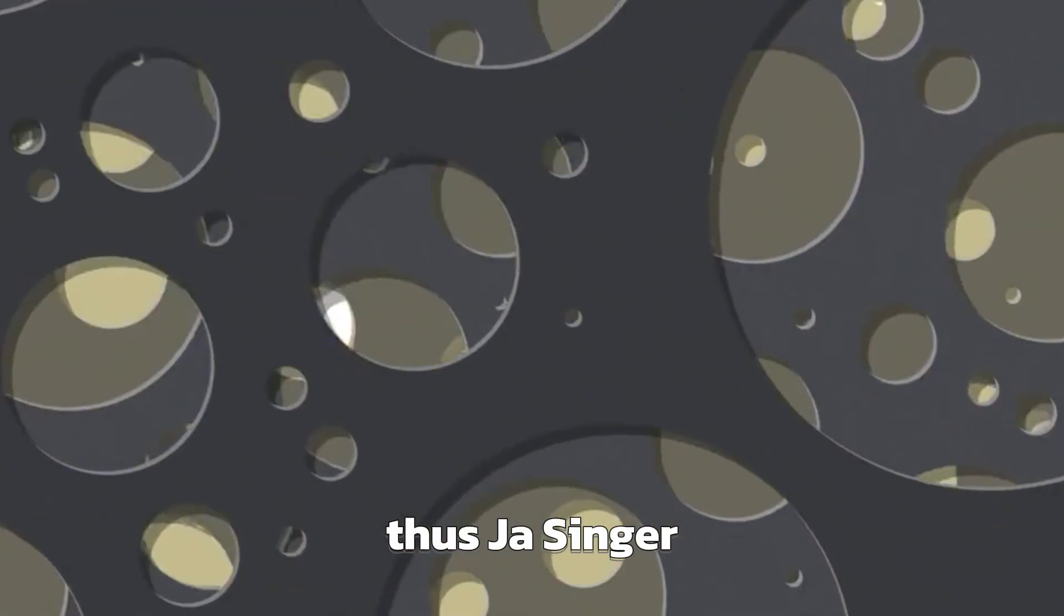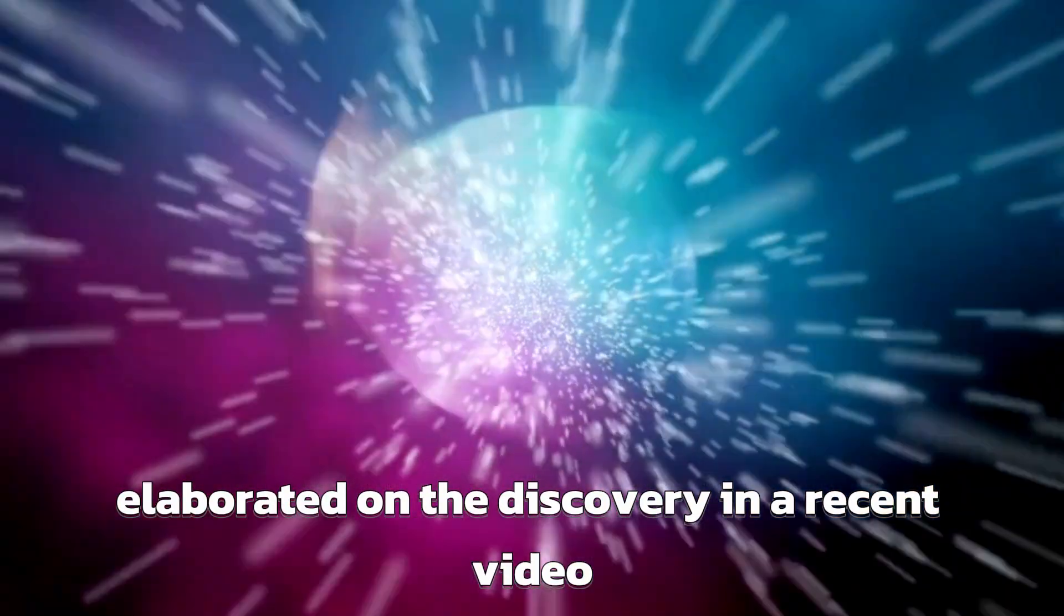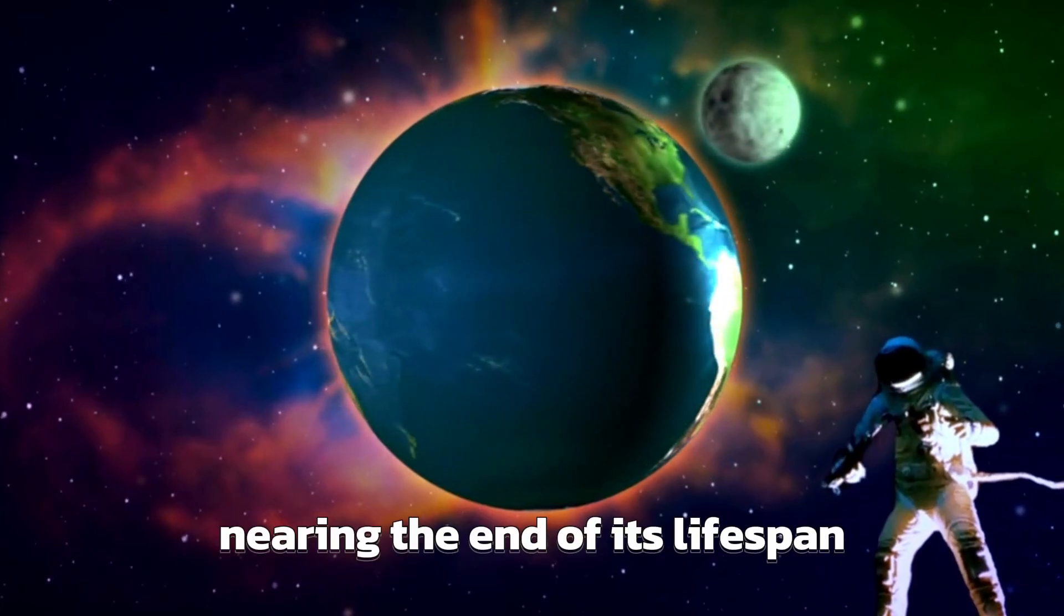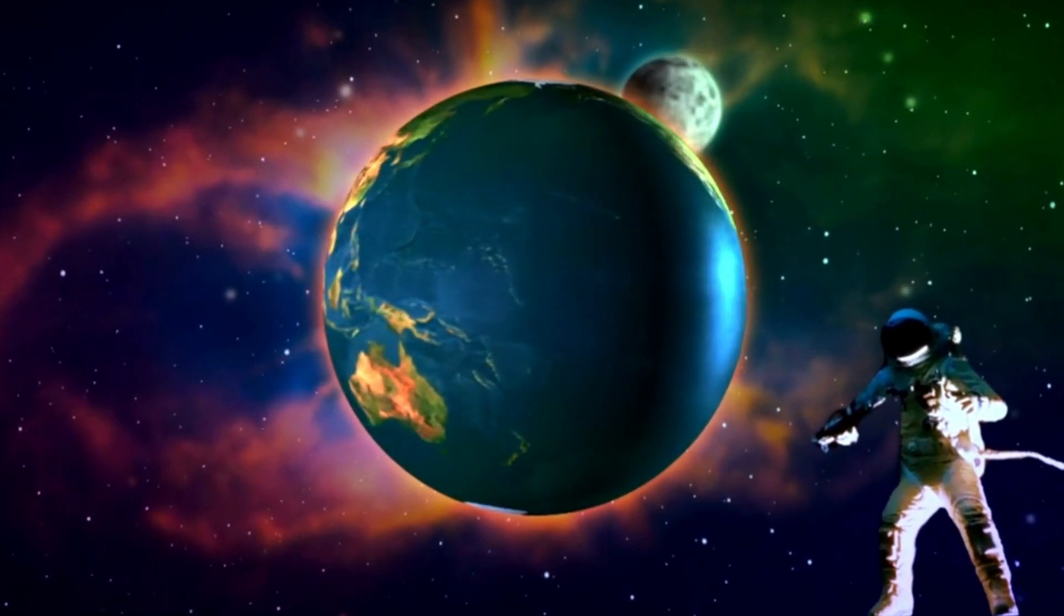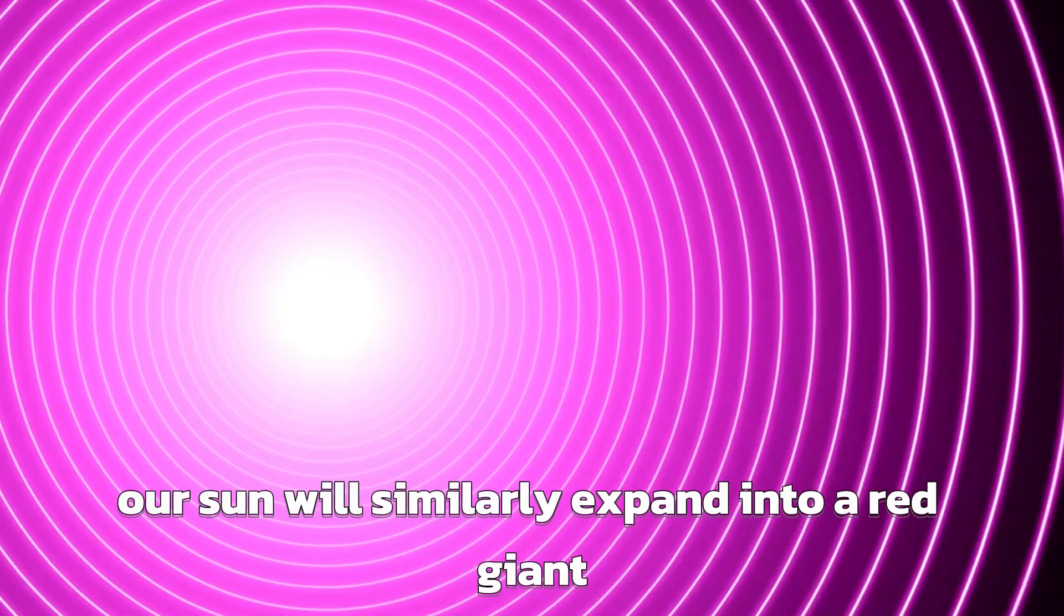Thus, Tharindu Jayasinghe, leader of the discovery team and an astronomy PhD student at Ohio State University, elaborated on the discovery in a recent video. The unicorn's companion is a bloated red giant star nearing the end of its lifespan. In roughly 5 billion years, our sun will similarly expand into a red giant.